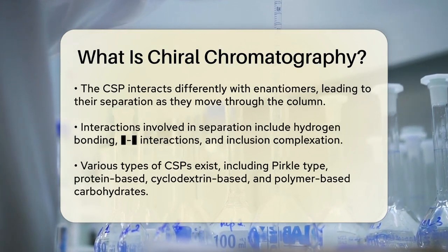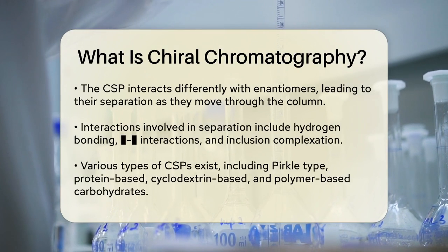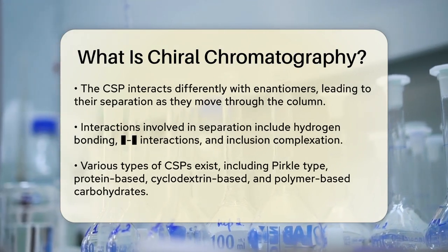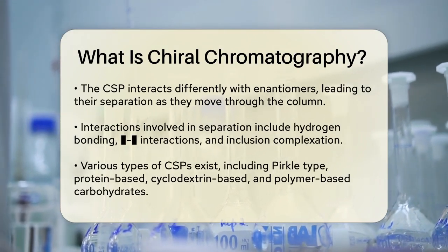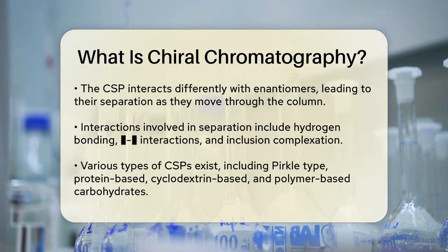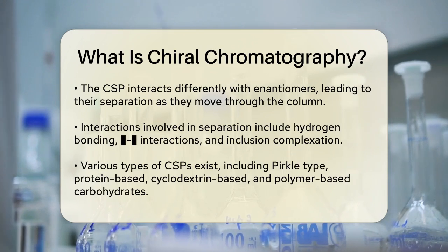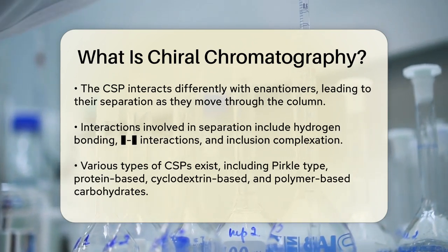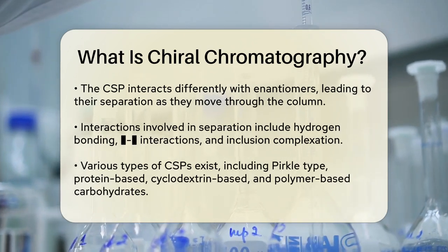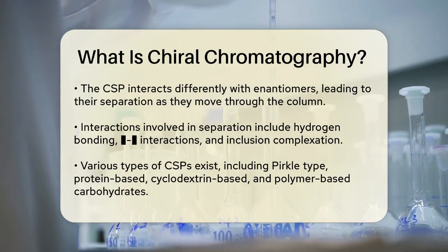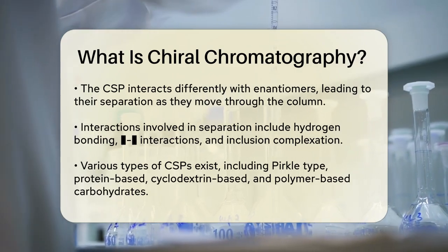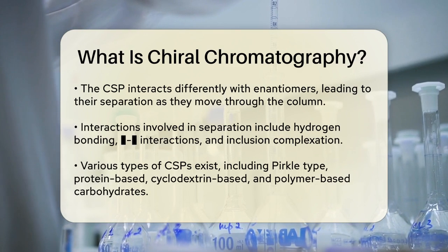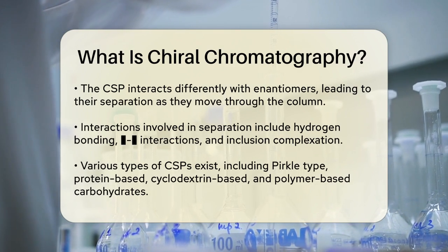The process works because the chiral stationary phase interacts differently with the two enantiomers — the mirror image molecules of a chiral compound. These interactions can include hydrogen bonding, pi-pi interactions, dipole stacking, inclusion complexation, and more.